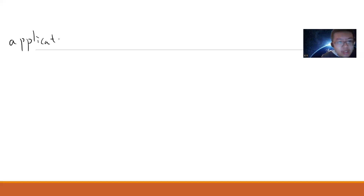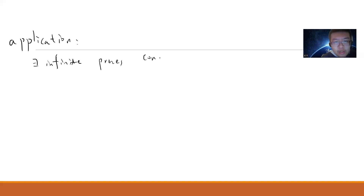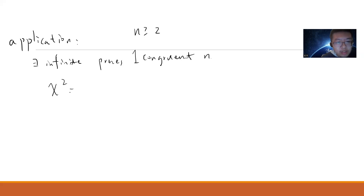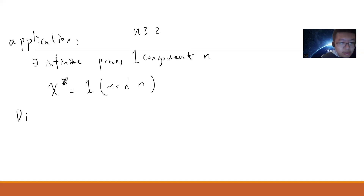Our application is that we will prove there are infinitely many primes congruent to 1 mod n, for any n greater than or equal to 2. Simply speaking, there are infinitely many primes x such that x is congruent to 1 mod n. This is a special case of Dirichlet's theorem.